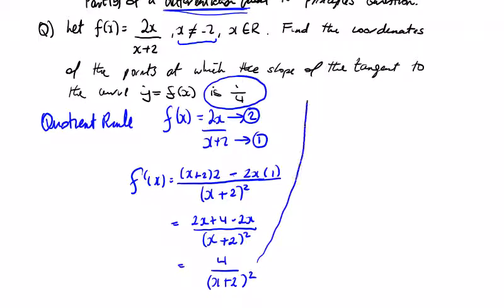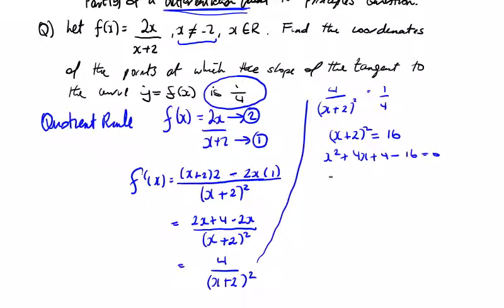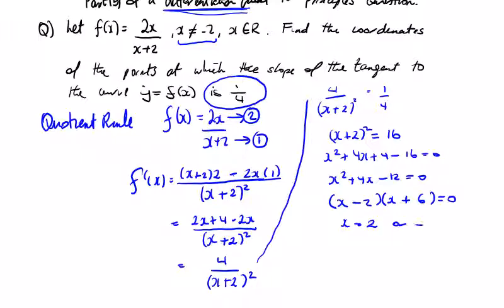This is the slope at any point, and we're asked to find coordinates where the slope is 1/4. So set 4/(x+2)² = 1/4, giving (x+2)² = 16. Expanding: x² + 4x + 4 − 16 = 0, so x² + 4x − 12 = 0. Factorising: (x+6)(x−2) = 0, giving x = 2 or x = −6.